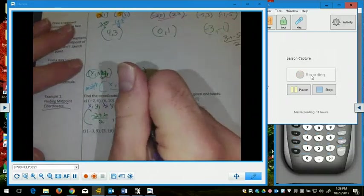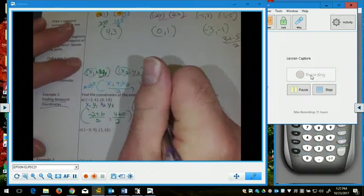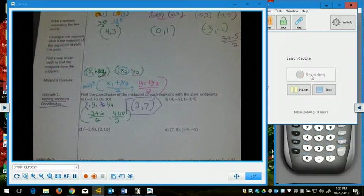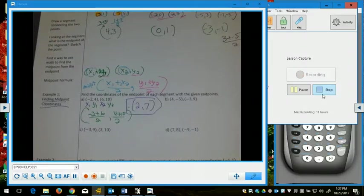That's 4 over 2, which is 2, and 14 over 2, which is 7. So, 2 comma 7. Please take a moment to pause the video and try letters B, C, and D.